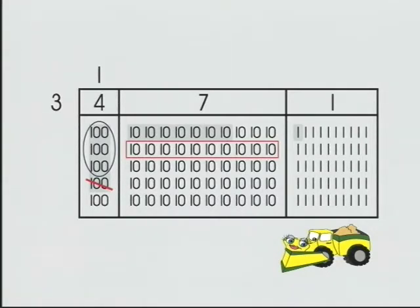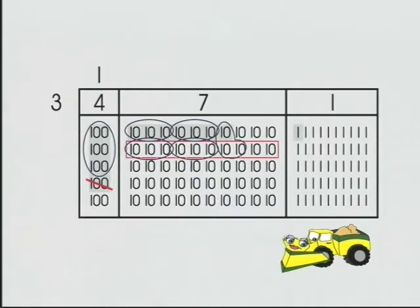Again, the group size is 3. 1, 2, 3, 4, 5 — 5 groups of 3. Record. 2 tens left.